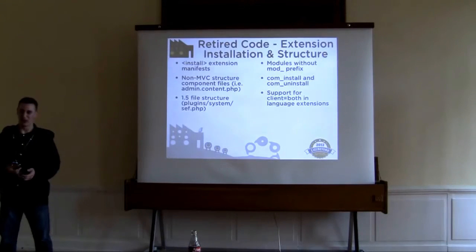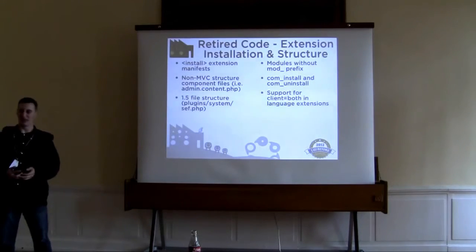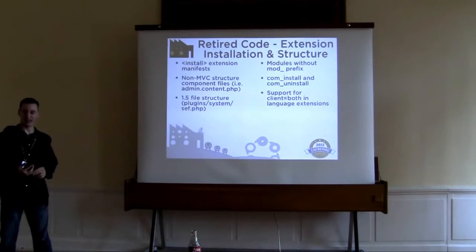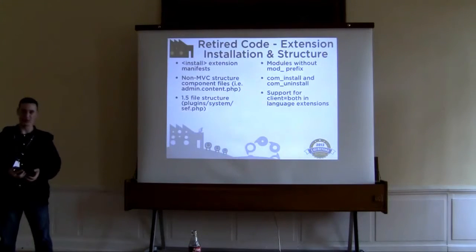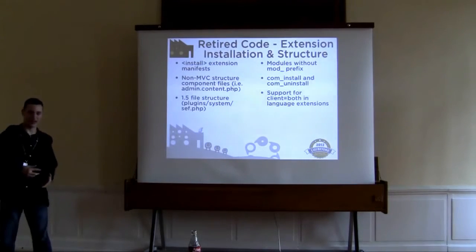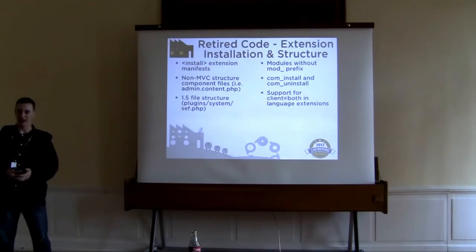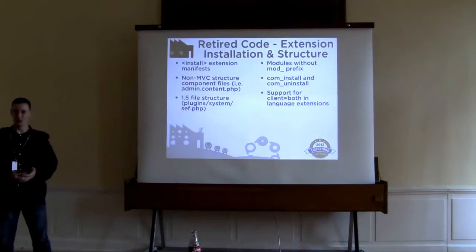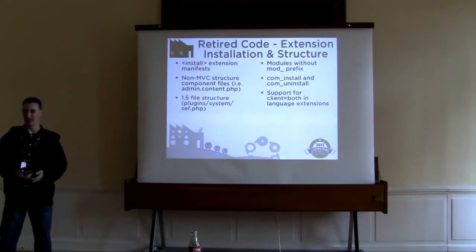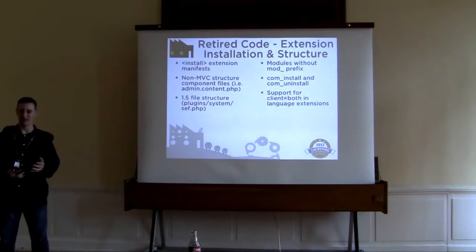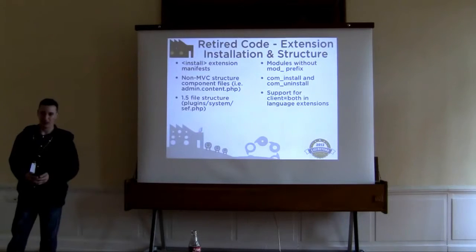These next slides cover where a lot of the backwards compatibility changes are made. The big ones dealing with extensions: support for the install root tag has been completely removed in favor of the extension root tag, which was introduced in 1.6. This change alone will prevent you from creating native packages that support CMS 1.5, 2.5, 3.0, and so on. We've also removed the code that automatically loads files that didn't use the MVC structure, such as admin.content.php and toolbar.content.html.php. If you wish to keep using them, you'll have to load them on your own.